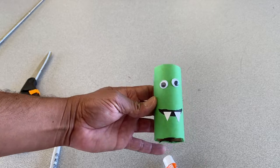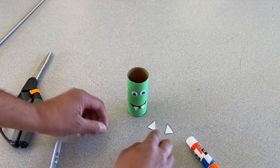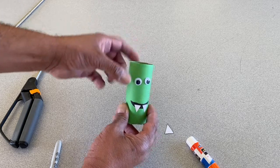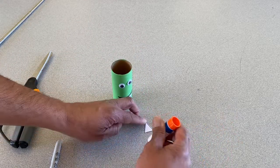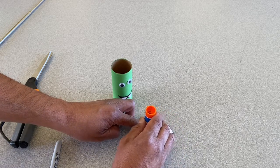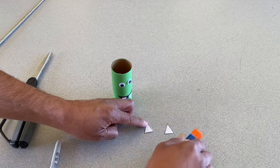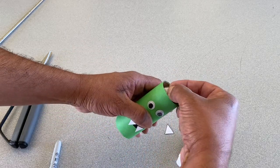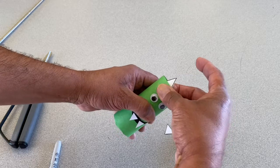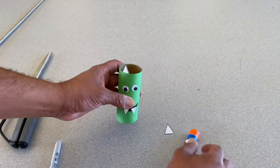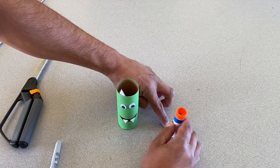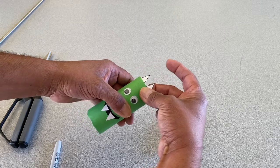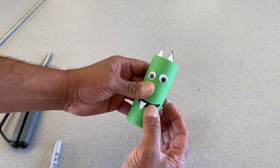For our next step we need to attach the ears inside the tube above the eyes. Using your glue stick again, just add glue to the bottom half of the triangle and attach it right above the eye. Repeat it on the other side as well. Remember, just add glue to the bottom half and apply it inside the tube above the other eye.